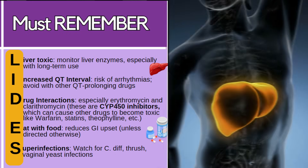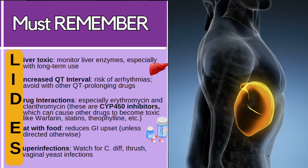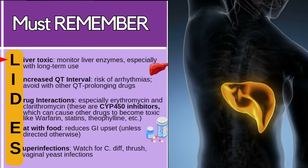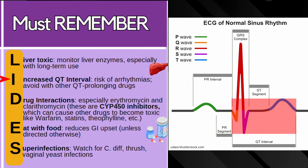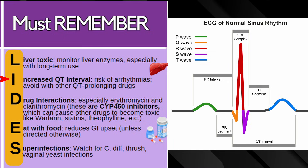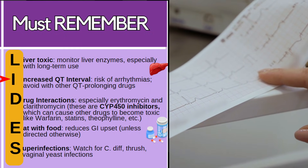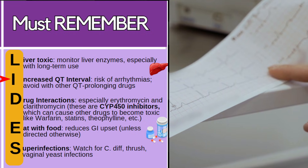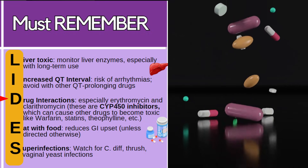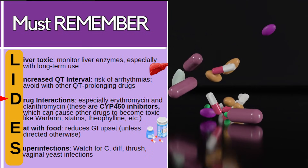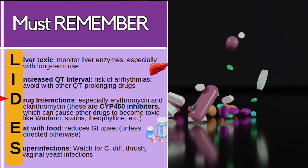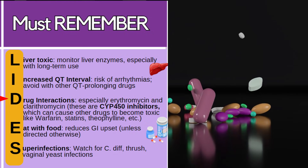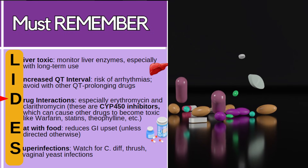Remember the word 'LIDES' to recall the main considerations for this class. L is for liver toxic — monitor the patient's liver enzymes, especially with long-term use. It can also increase the QT interval, posing a risk for arrhythmias, especially if the patient is on other QT-prolonging drugs like amiodarone — check their ECG. There are also many drug interactions: erythromycin and clarithromycin are CYP450 inhibitors, which can cause other drugs like warfarin, statins, and theophylline to become toxic.